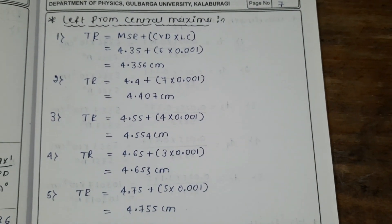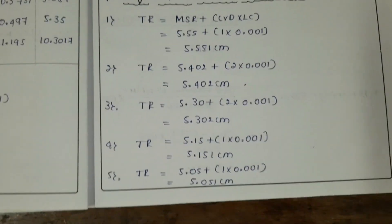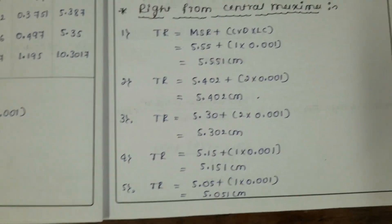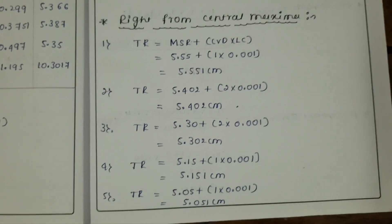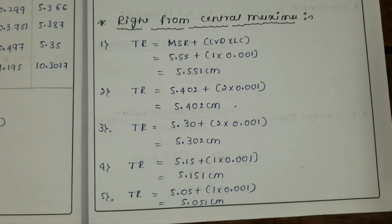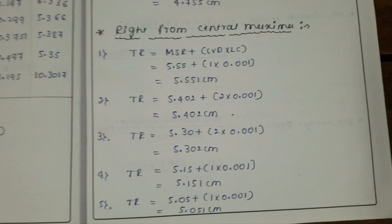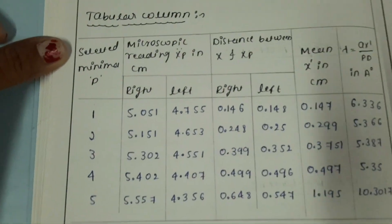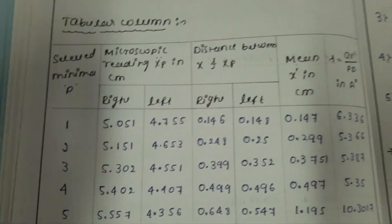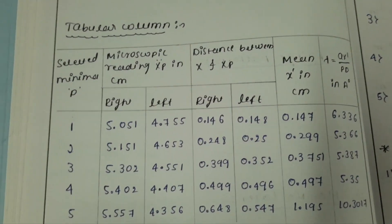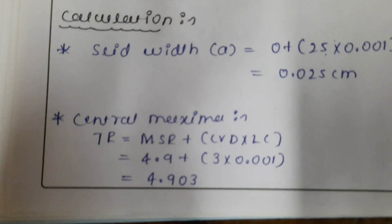Take 5 readings from the right and left of the central maxima. Then put them in a tabular column.